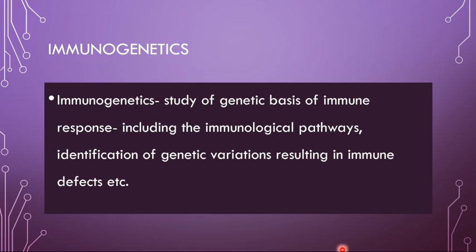Immunogenetics, as the name implies, is a branch of genetics concerned with the study of the genetic basis of immune responses — including immunological pathways, identifying variations responsible for immune defects, and identifying specific gene targets for vaccine formulation. From identifying genetic expression pathways to formulating treatments for immune disorders, this is what we understand as immunogenetics.